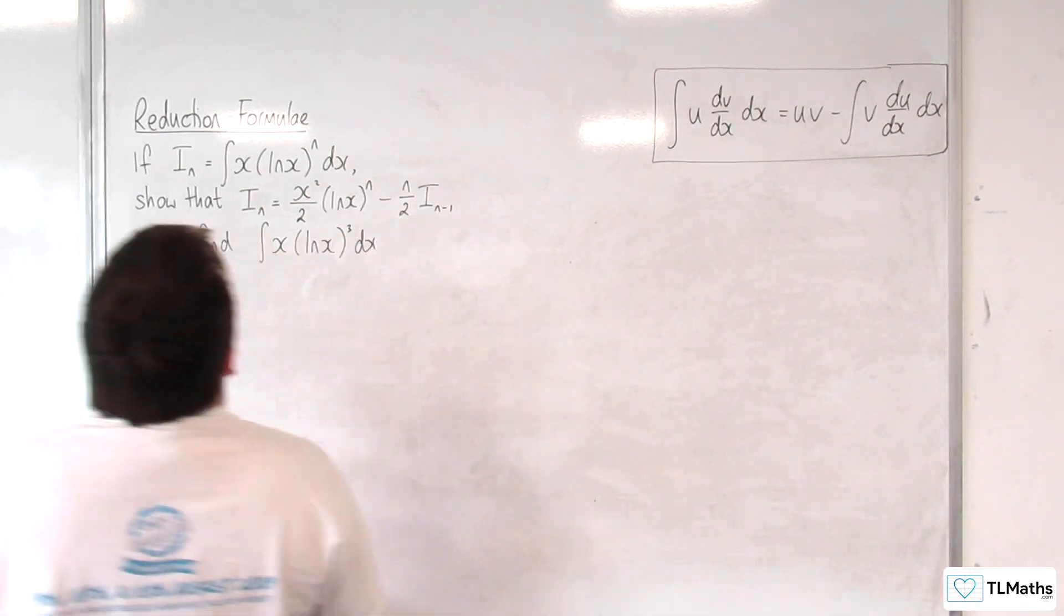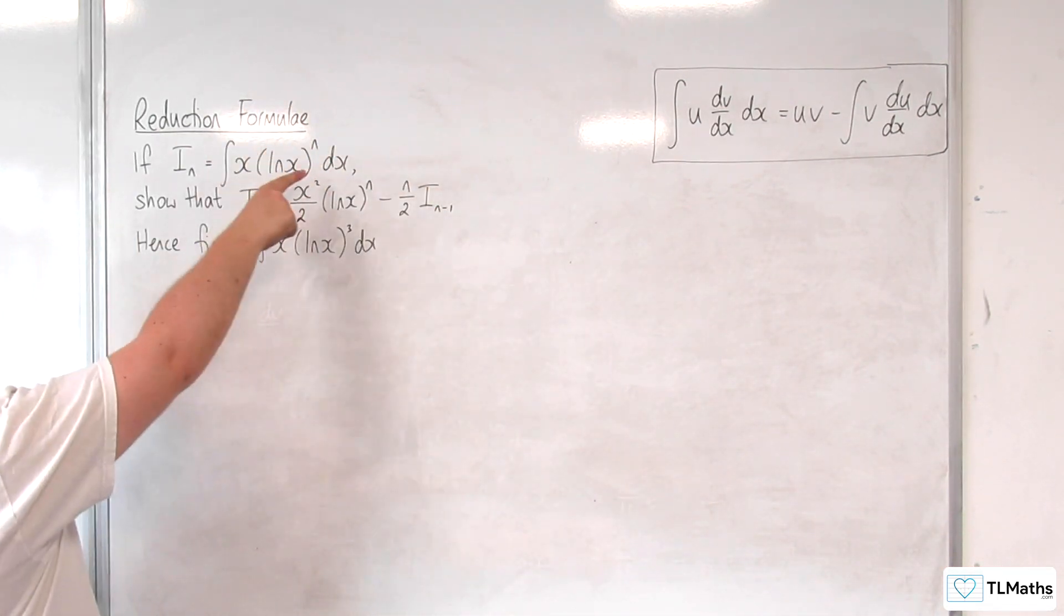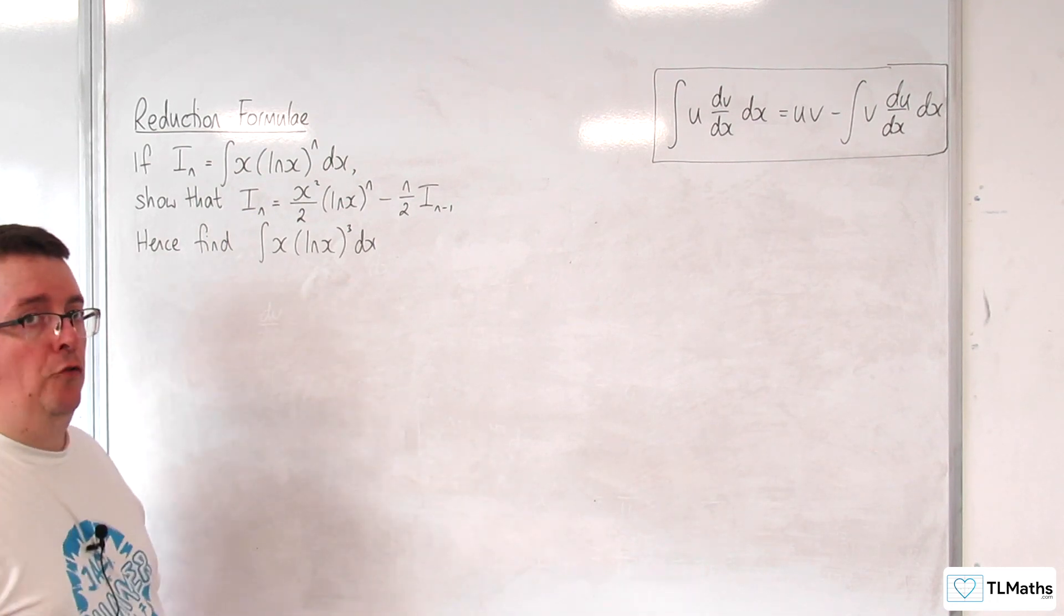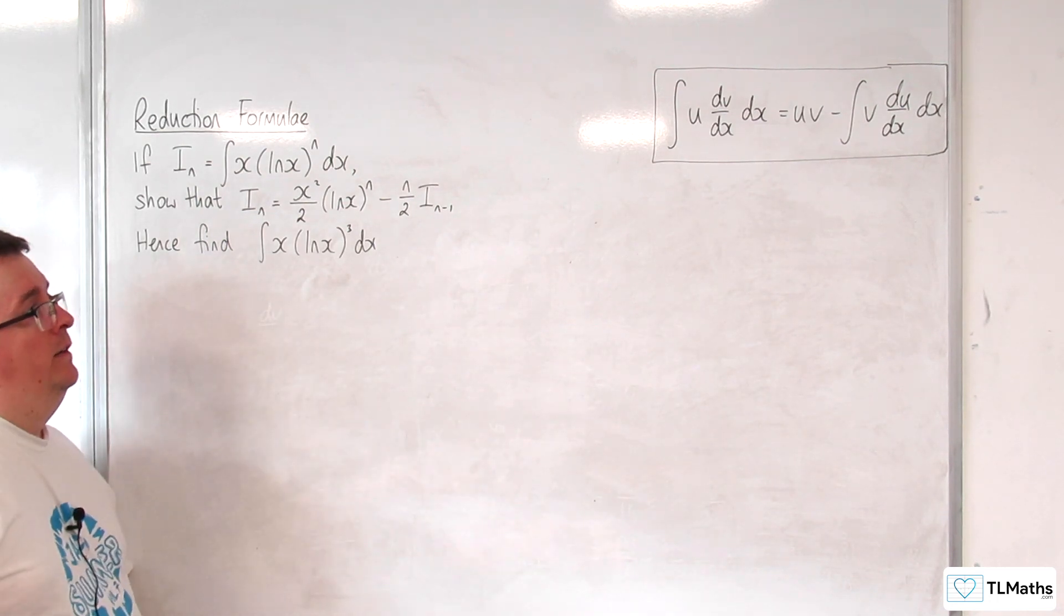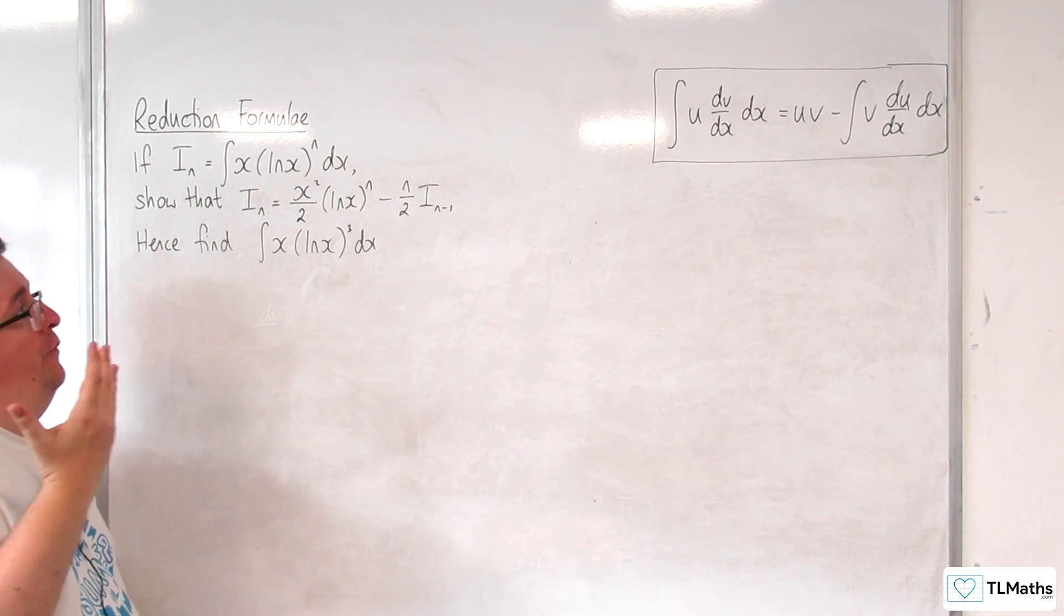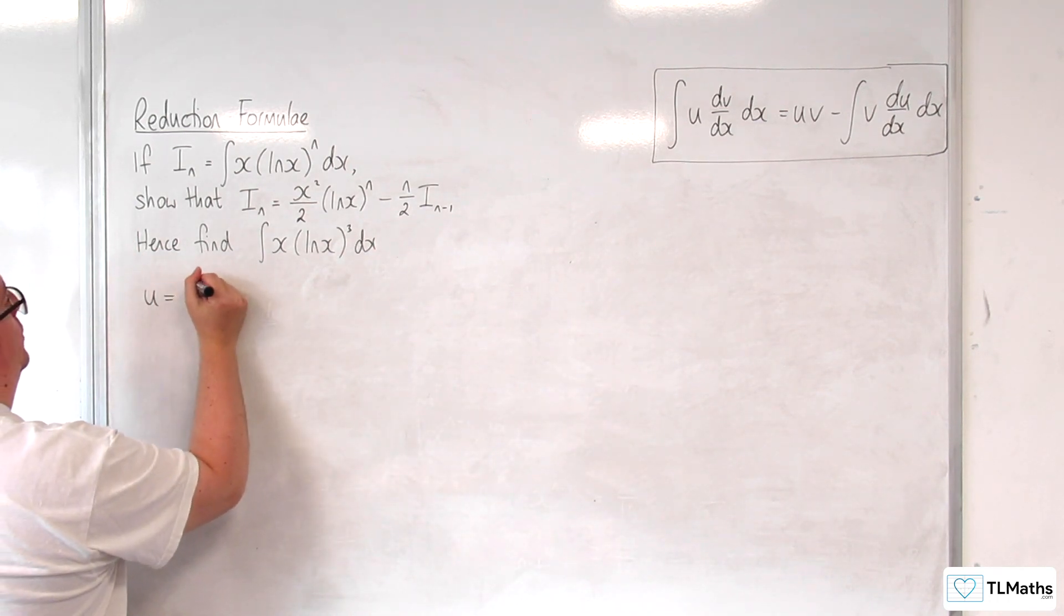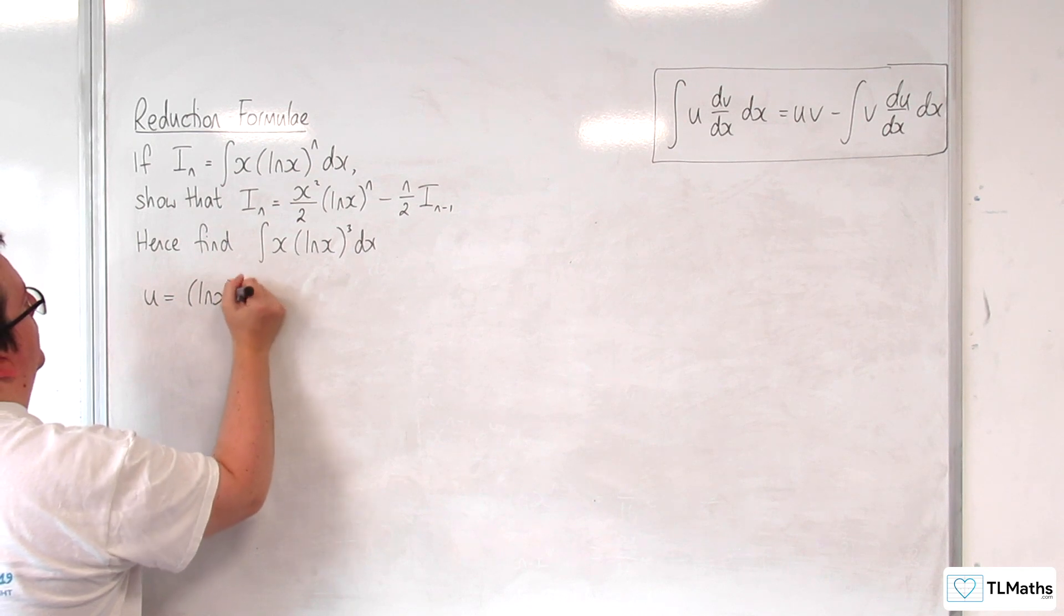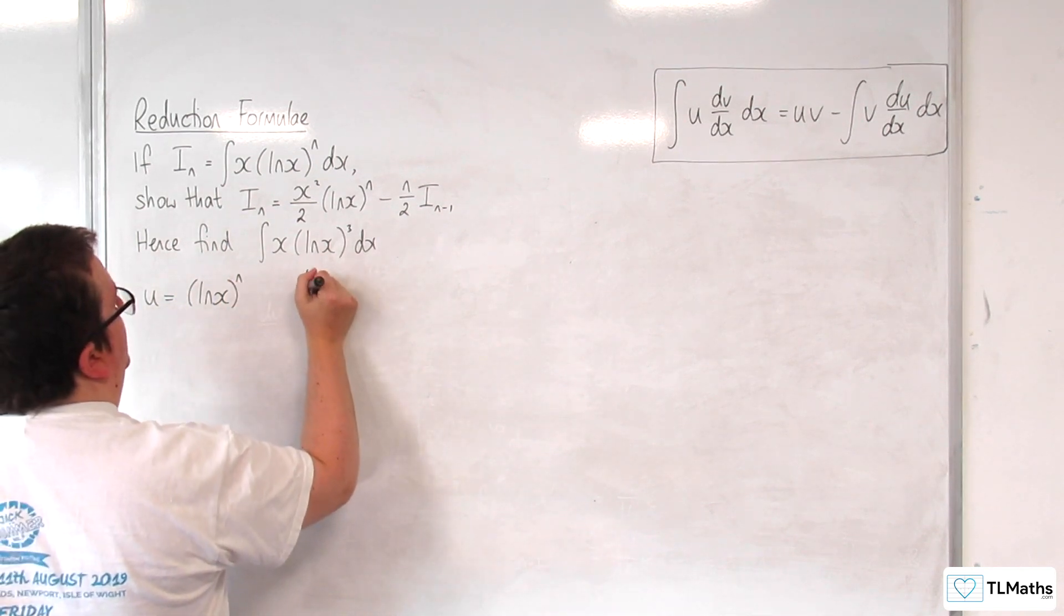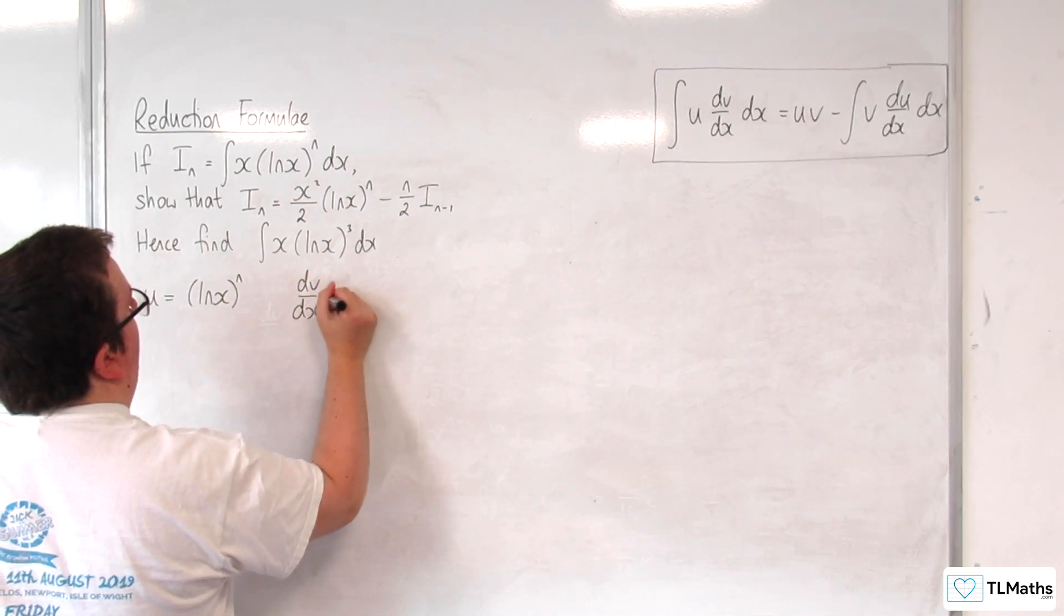So using integration by parts on this, you've got to remember the LATE formula. So remember L is the choice of u here, so we would pick u is equal to the natural log of x to the power of n and have dv by dx as the x.